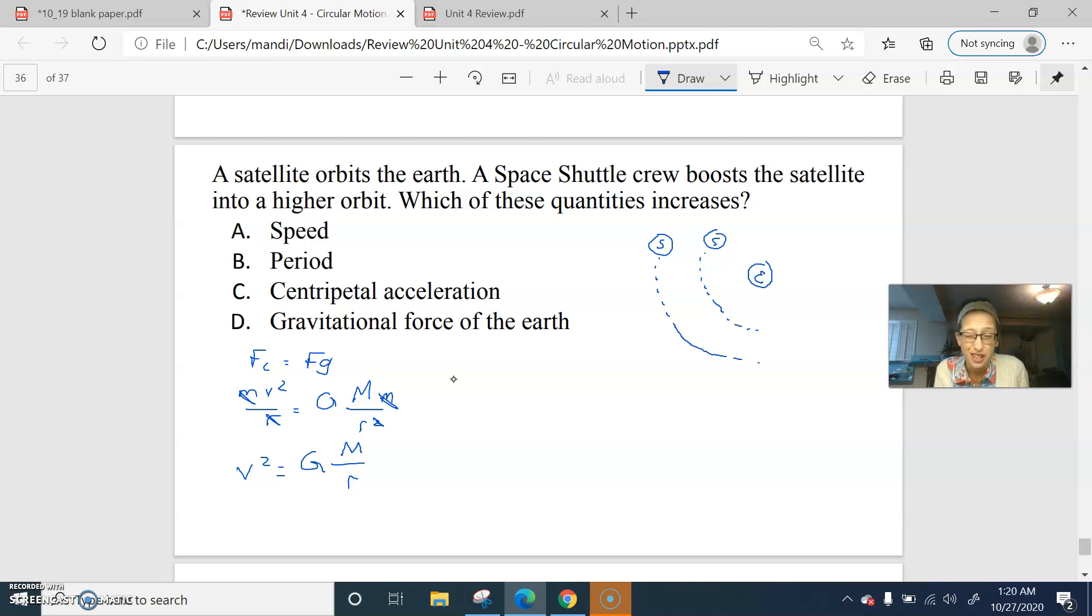Okay, big G is not changing. The mass of the Earth doesn't change just because we boosted a satellite. The radius increases. So if the radius increases and everything else stays the same, our velocity has to decrease to keep our equal sign true. Speed doesn't increase, it decreases.